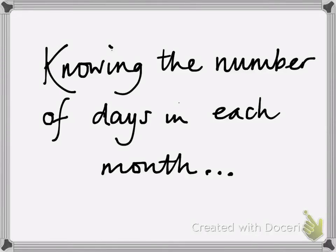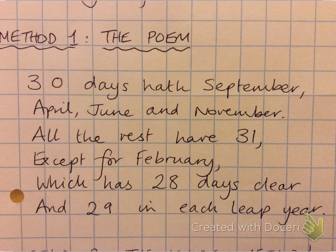Here's a quick video for two different methods for knowing the number of days in each month. The most conventional one is the poem: 30 days hath September, April, June and November. All the rest have 31, except for February which has 28 days clear and 29 in each leap year.